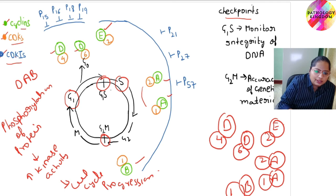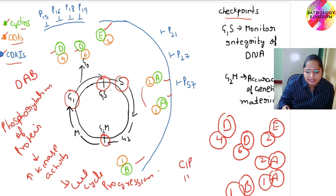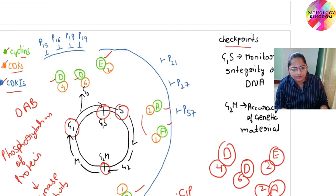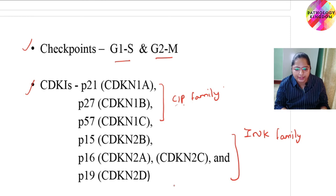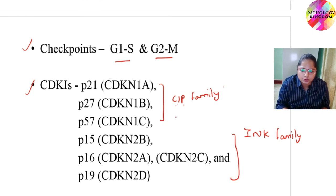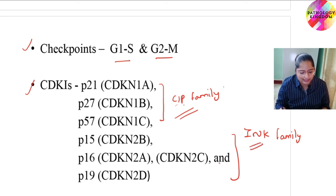Now the various CDKIs. There are two families: CIP and CINK. As we have already discussed, P21, P27, P57 belong to CIP family, and P15, P16, and P19 belong to INK family.